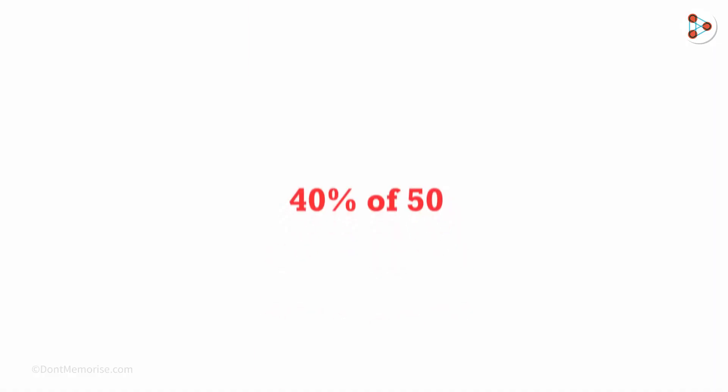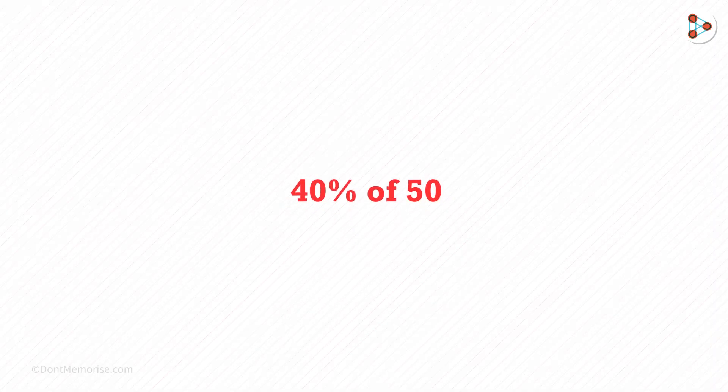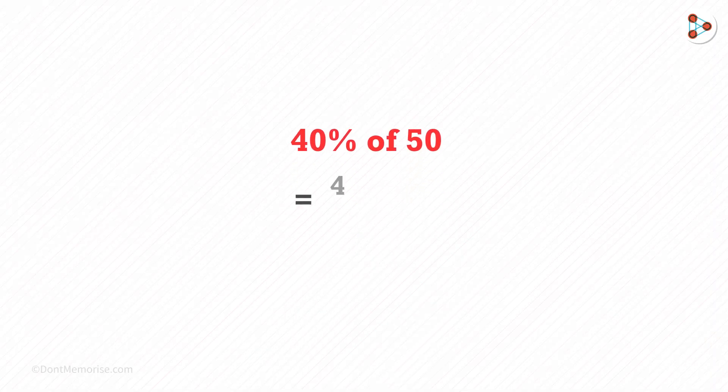In this video and over the next few videos, I'm going to teach you all a few special tricks to solve percentage problems. Let's look at the first trick. 40% of 50. This is equal to 40 over 100 multiplied by 50. By solving this, we get the answer as 20.